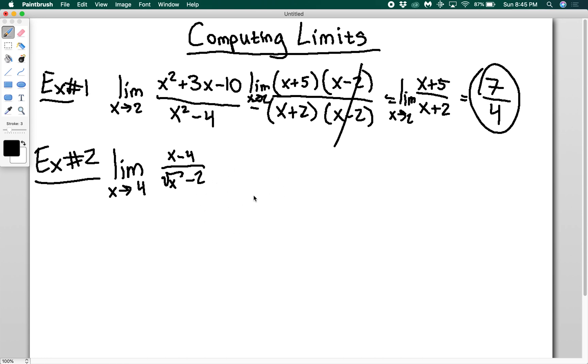If I plug in 4 again, I'm going to end up with a zero on the bottom and that makes everyone unhappy. There's two ways you can solve this. One, you can treat the top as a difference of squares where you have the square root of x plus 2 times the square root of x minus 2 and factor it, or you can multiply the top and the bottom by the square root of x plus 2 and that will give you x minus 4 on the bottom and you'll be able to do some cancellation as well.